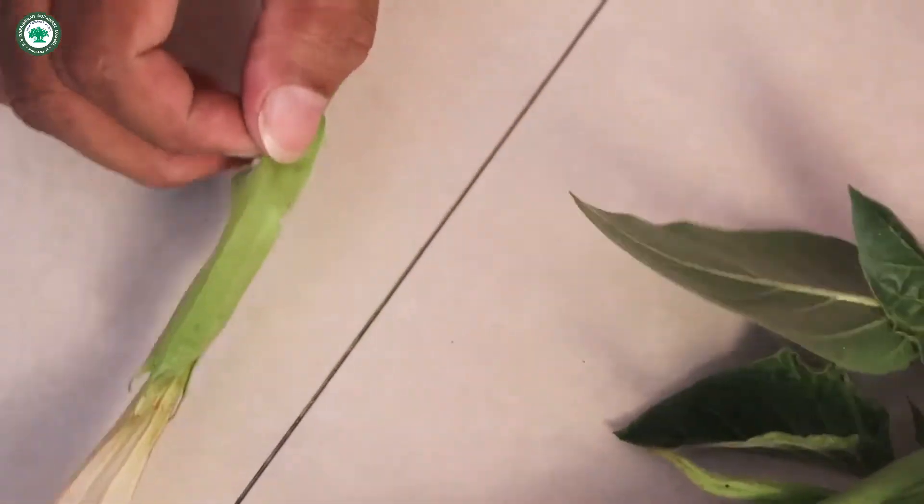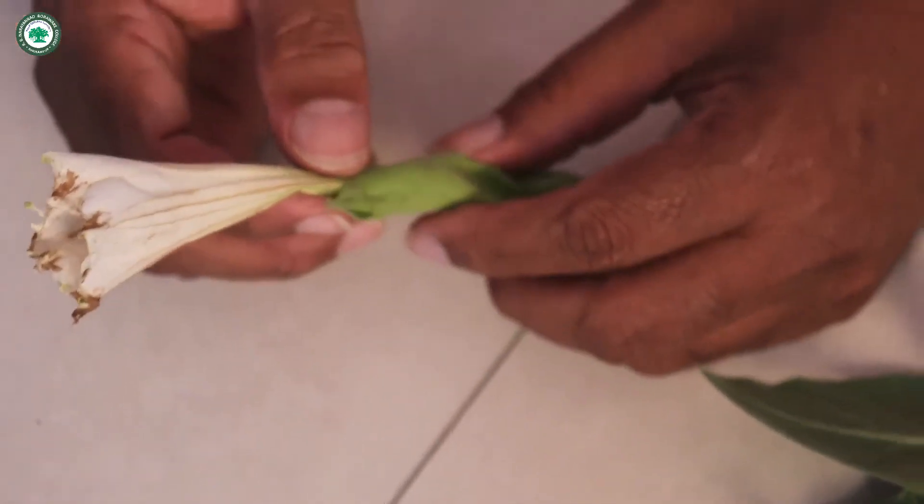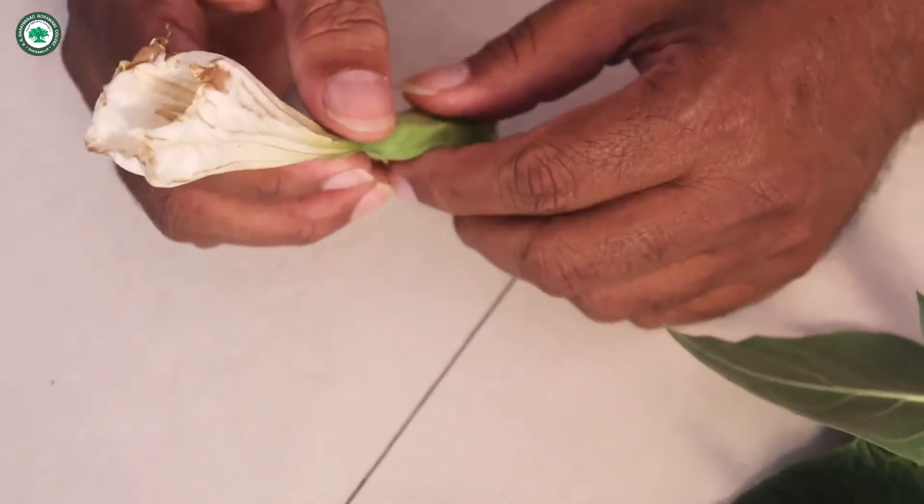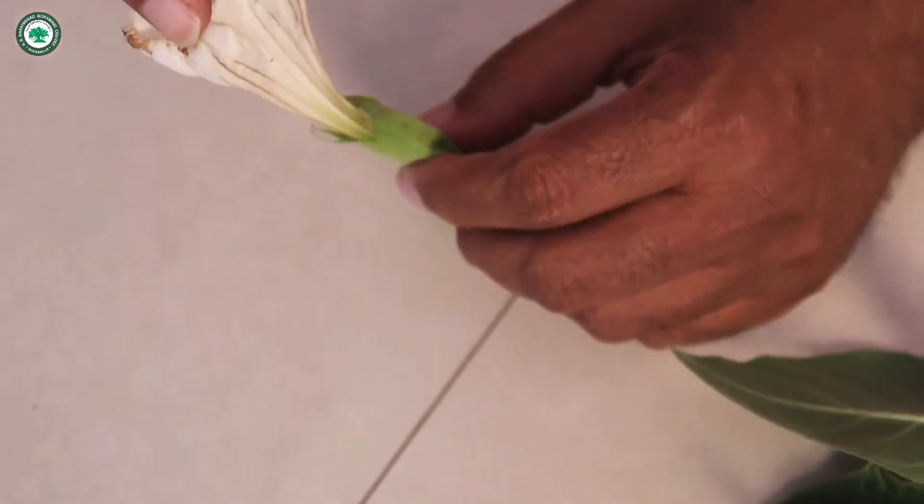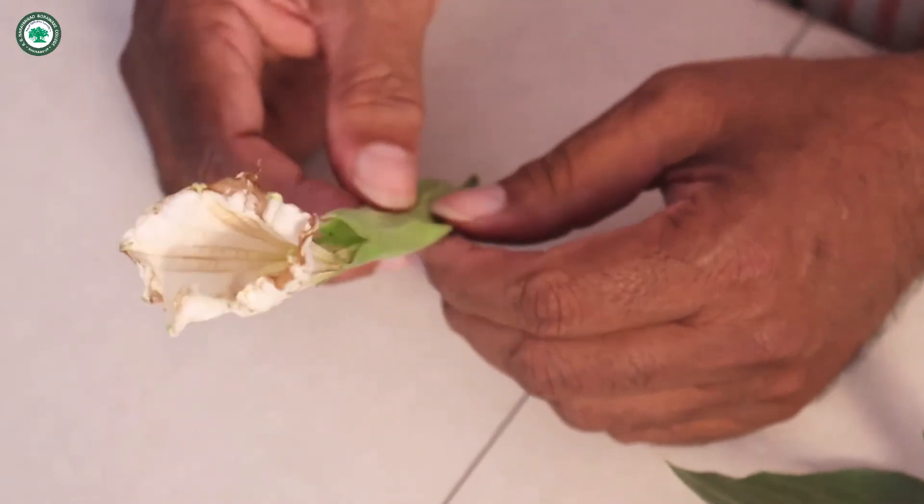Now the corolla. Now this is the corolla. Now petals are five in number. Gamopetalous is the condition. Aestivation is twisted. The infundibuliform is there. Then it is white in color and petals are very large.